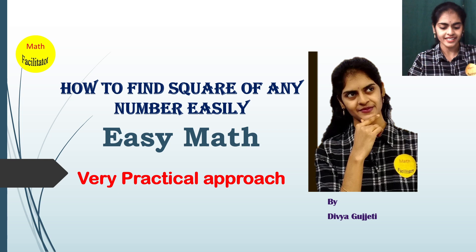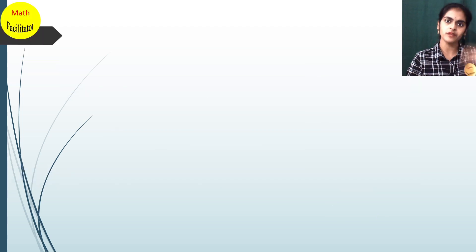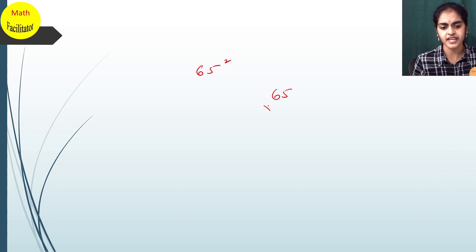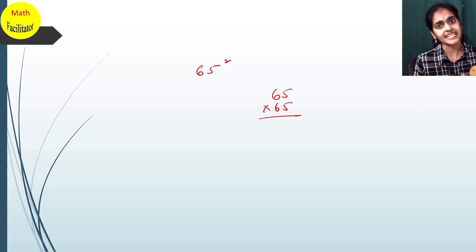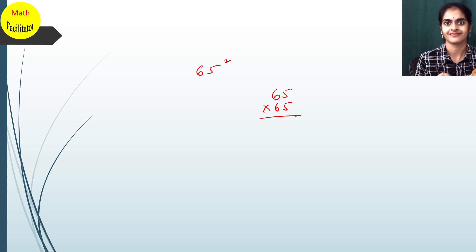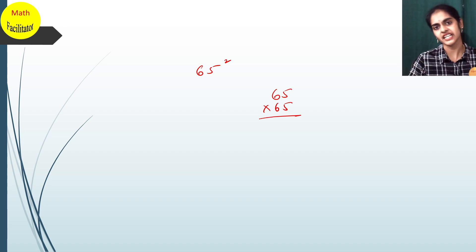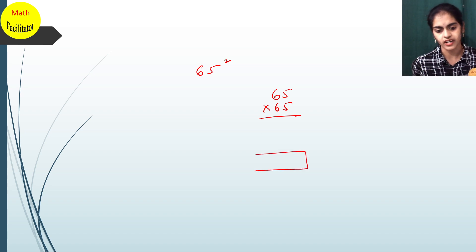If you keep on multiplying numbers, suppose I ask you to find 65 squared — what do we generally do? We multiply 65 times 65. Multiplying is a very lengthy process and also complicated, and many students make a lot of mistakes in multiplication and end up with the wrong answer.